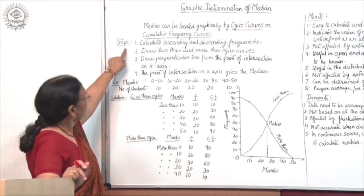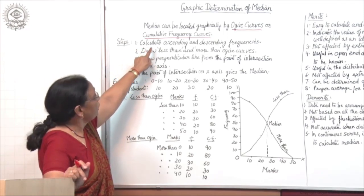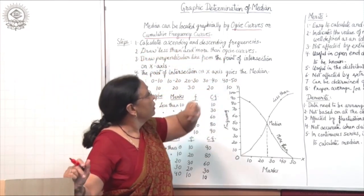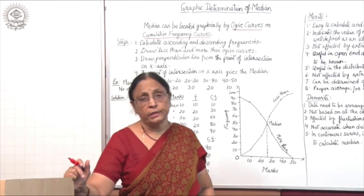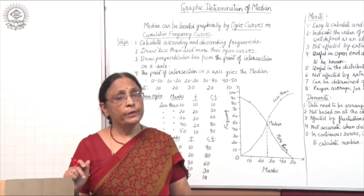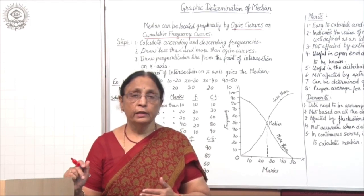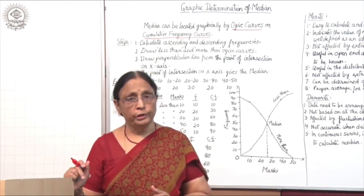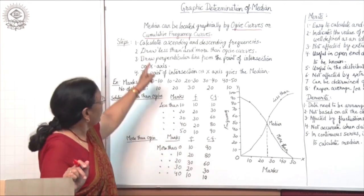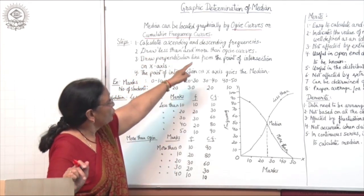Now the steps: First, calculate ascending and descending frequencies — arrange the frequency in ascending and descending order. Second, draw less than and more than ojive curves.